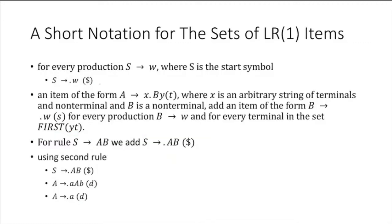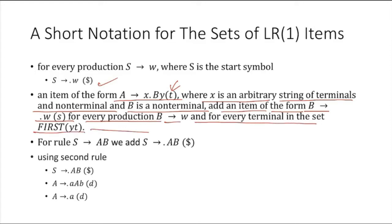Now for every production rule, an item of the form A → x·By(t), where x is an arbitrary string of terminals and non-terminals and B is a non-terminal, add an item of the form B → ·w with lookahead for every production B → w and for every terminal in the set FIRST(yt).